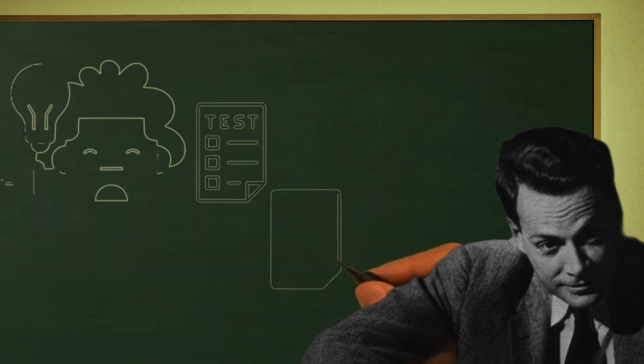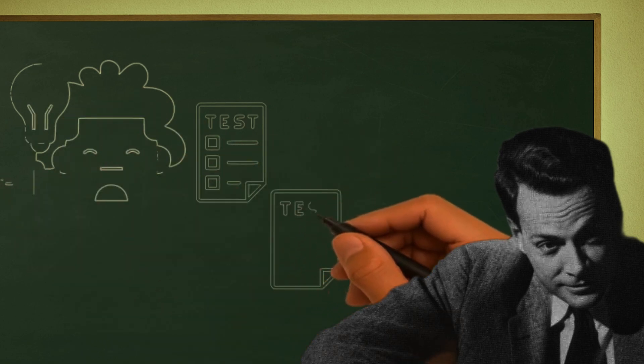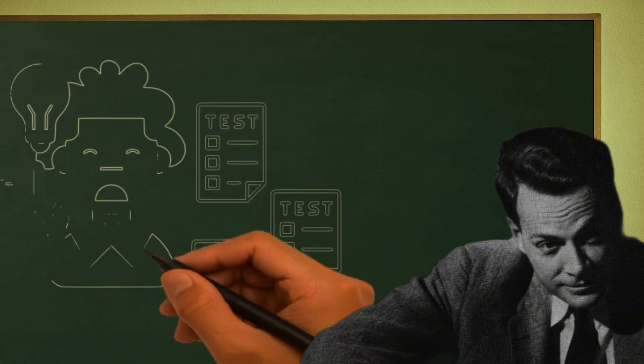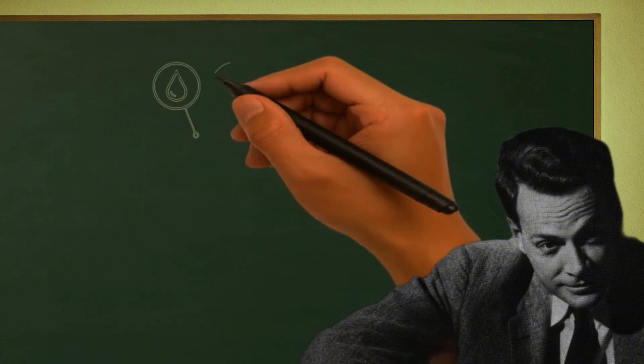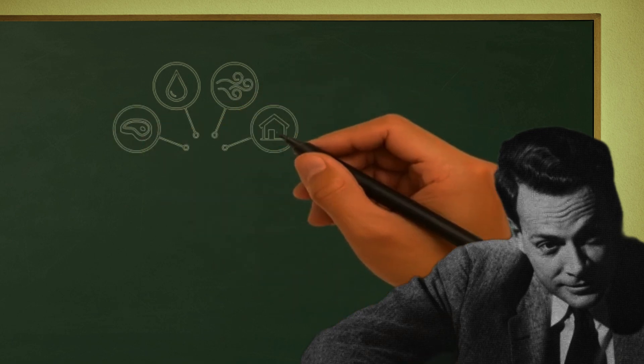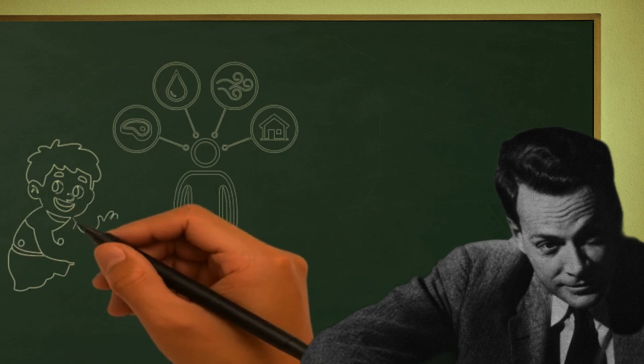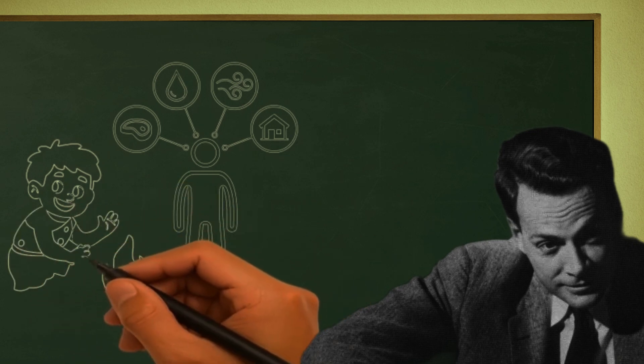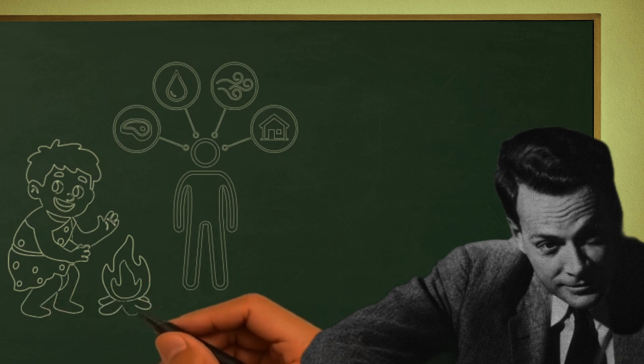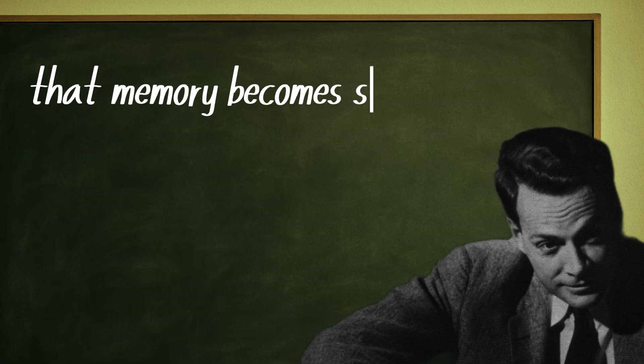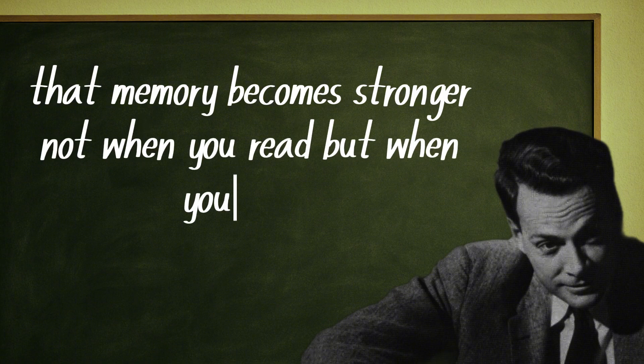Geniuses never trust the feeling of 'I know.' They test what they know, not to get grades, but to see if the knowledge survives outside their heads. When you try to recall something without looking at your notes, the brain switches into survival mode. It searches through your connections, rebuilds the paths, and tries to access the information through different routes. It's in that process, the struggle, that memory becomes stronger. Not when you read, but when you reach.